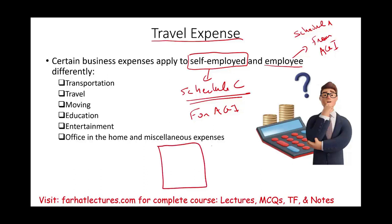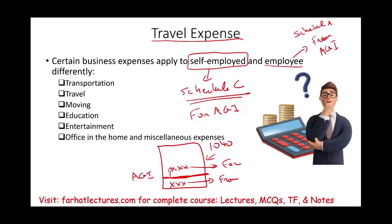Looking at Form 1040, at some point you reach your adjusted gross income. Schedule C — any deduction above the AGI line is called 'for AGI,' and any deduction below the AGI line is 'from AGI.' When you have a business on Schedule C, that schedule flows into a line on your 1040 above the AGI line, making it a 'for AGI' deduction.